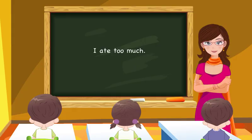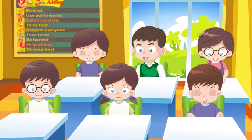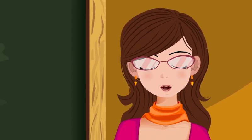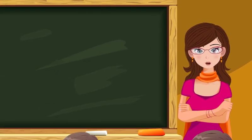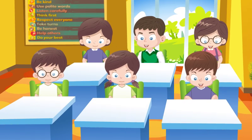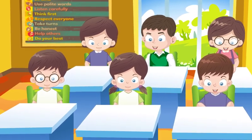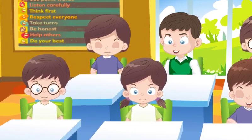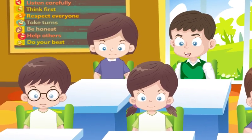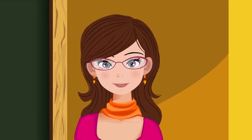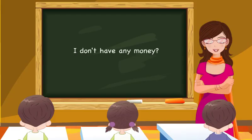'Some' is used before countable as well as uncountable nouns in affirmative sentences and to express offer or request. It means less in amount or number. Example: 'I got some nice presents for Christmas this year.' 'Any' is also used before countable as well as uncountable nouns and means some in number or amount. It is usually used in negative and interrogative sentences, but in affirmative sentences it can be used along with some negative adverbials. Examples: 'I don't have any money.' 'We don't have any sugar.'